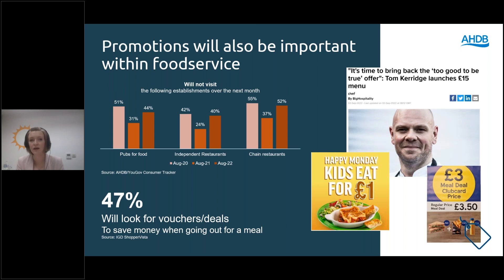We have examples here from across different channels within food service. For traditional pub restaurant dining, the Hungry Horse chain is offering a pound meal option for families. We must also remember that the competitive set within the out-of-home market includes grocery retail, and the example here is from the club card three-pound meal deal. We've just touched on the strength of the club card and how many consumers have it.